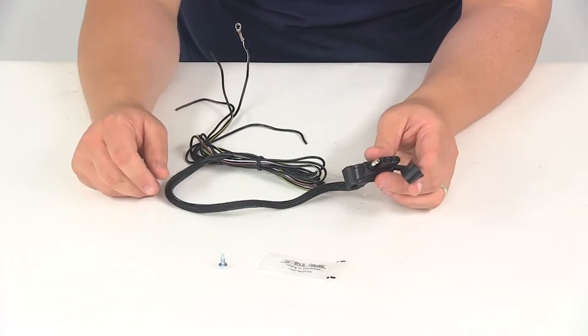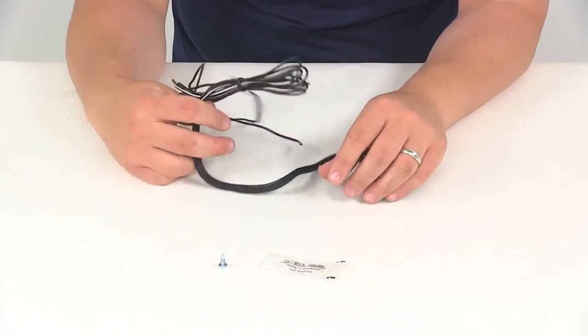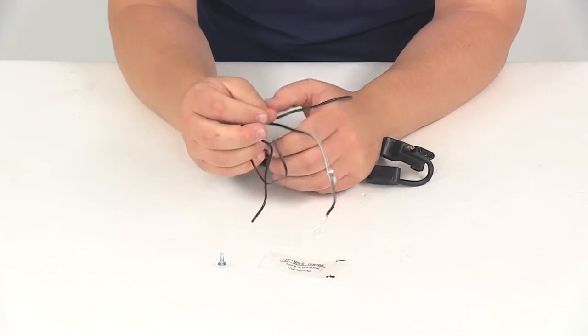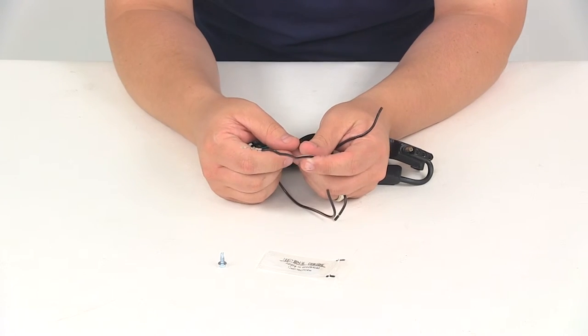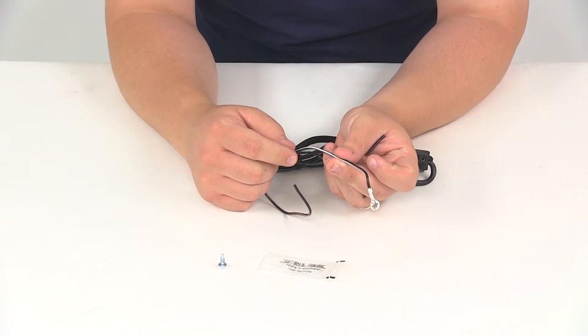The wires measure 48 inches in total length. It features the pigtail leads. One wire has your ring terminal attached to it for your ground connection. That's the black wire with the white stripe.